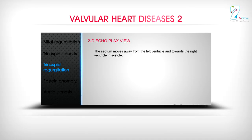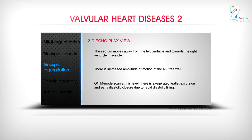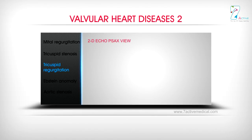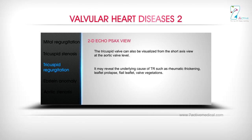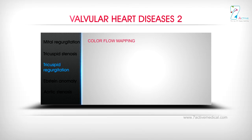2D Echo PLAX View: The septum moves away from the left ventricle and towards the right ventricle in systole. There is increased amplitude of motion of the RV free wall. On M-Mode scan at this level, there is exaggerated leaflet excursion and early diastolic closure due to rapid diastolic filling. 2D Echo PSAX View: The tricuspid valve can also be visualized from the short-axis view at the aortic valve level, which may reveal the underlying cause of TR such as rheumatic thickening, leaflet prolapse, flail leaflet, or valve vegetations.